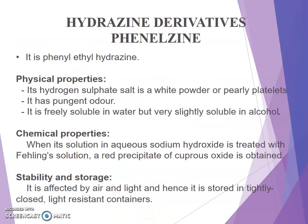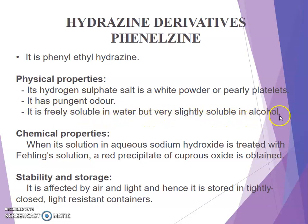Next drug is phenelzine, a hydrazine derivative. It is a phenylethylhydrazine. Physical property: its hydrogen sulfate salt is a white powder or pearly platelet with a pungent odor. It is freely soluble in water but very slightly soluble in alcohol. Chemical property: when its solution in aqueous sodium hydroxide is treated with Fehling's solution, a red precipitate of cuprous oxide is obtained. Stability: it is affected by air and light, stored in a tightly closed, light-resistant container.